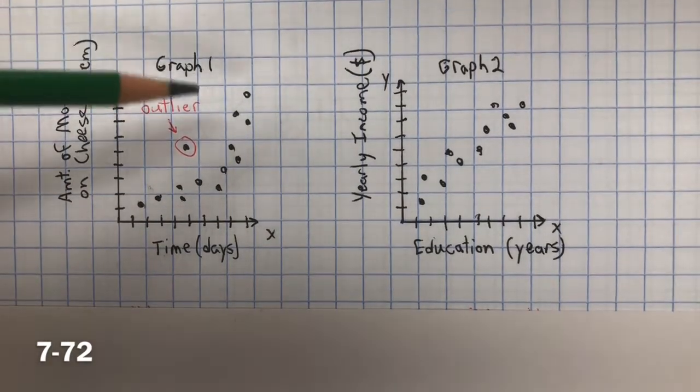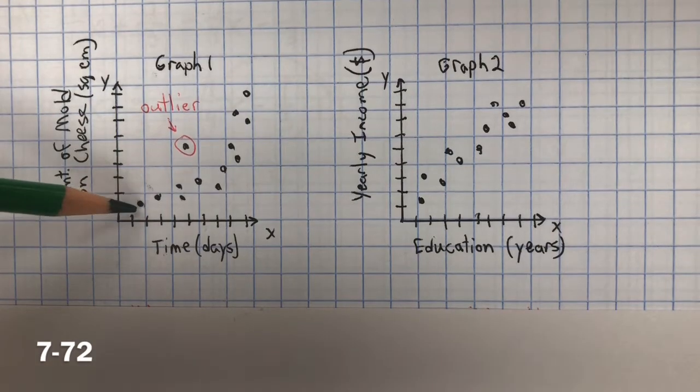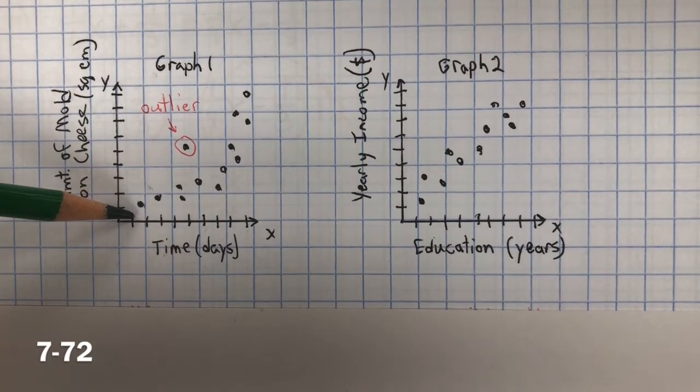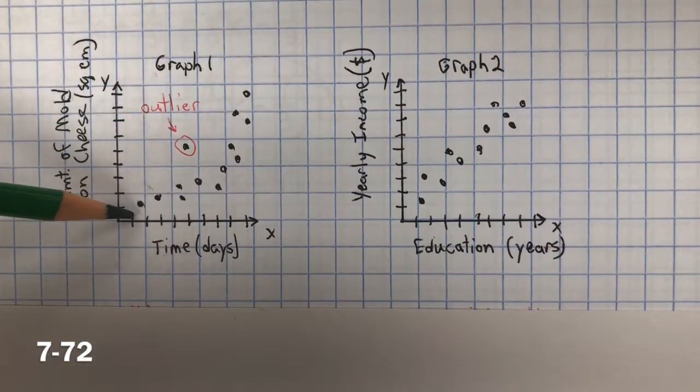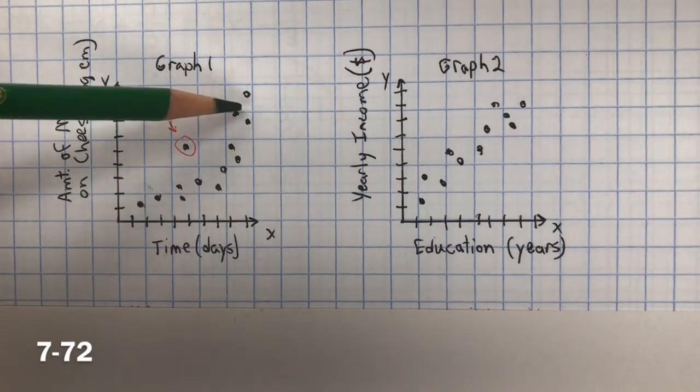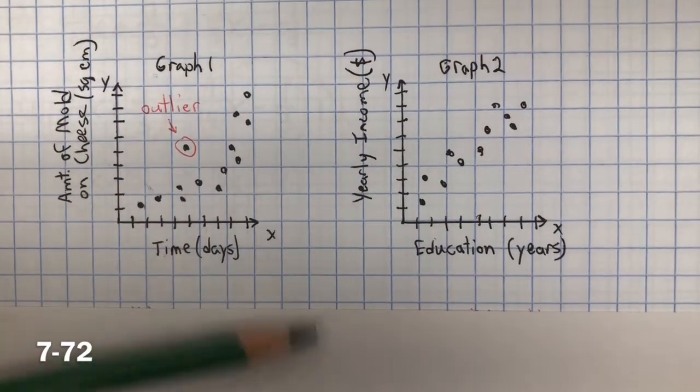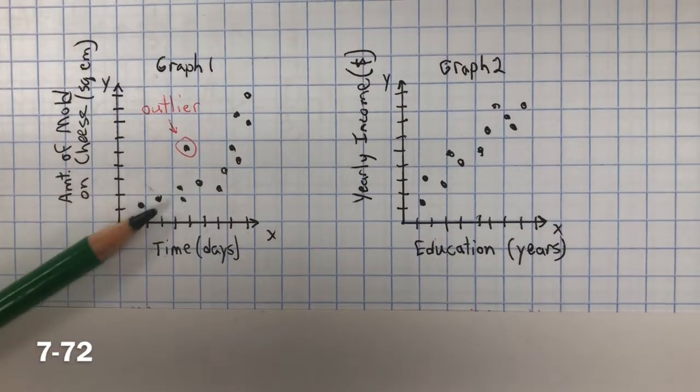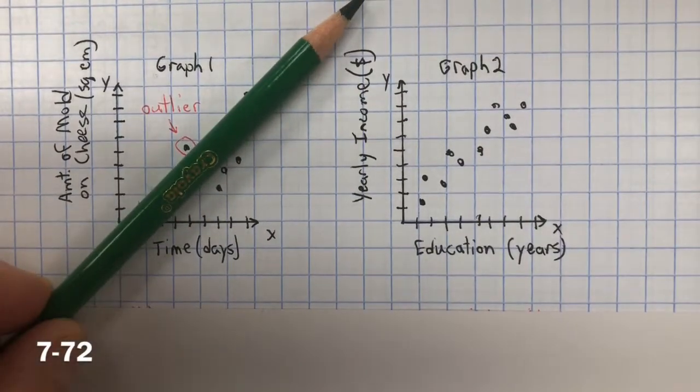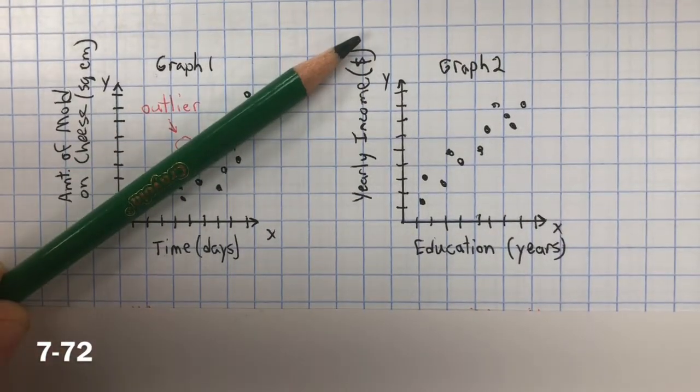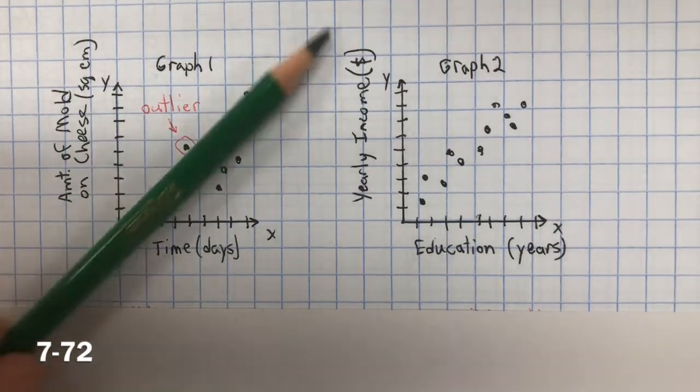But the other thing that you want to look at is, this one is not considered linear. So we would say this is a non-linear positive association. Because even though you can see that there's a positive trend, it's not linear. There's more of a curve to it.